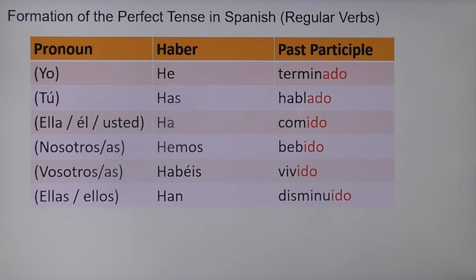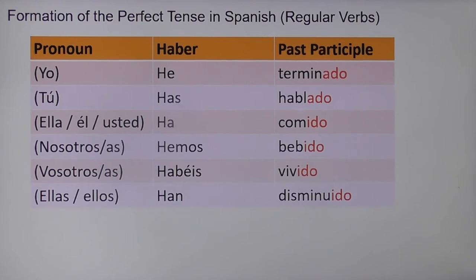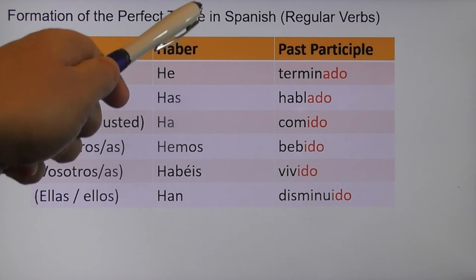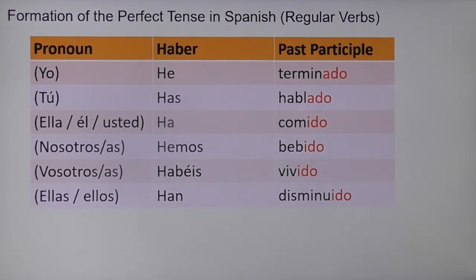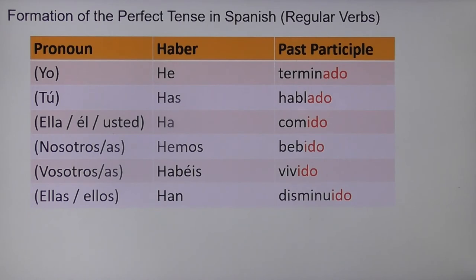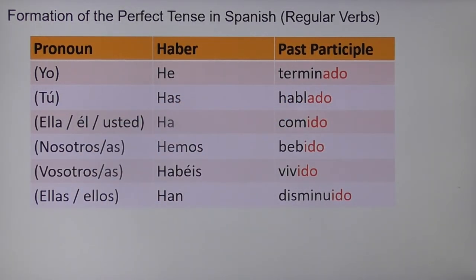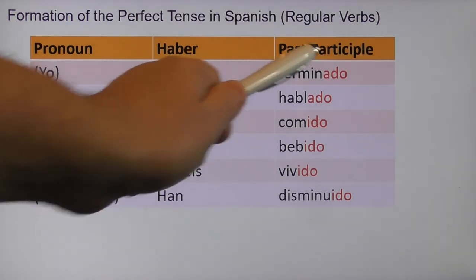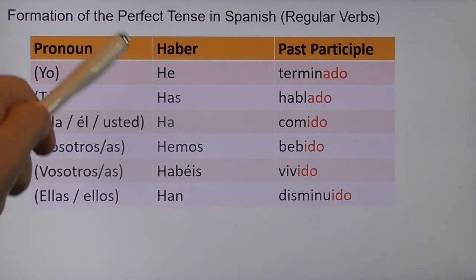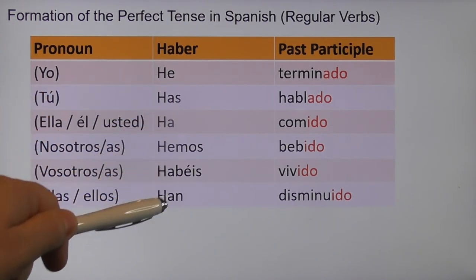So how do you form the perfect tense in Spanish? We're going to look at regular verbs to begin with. Here is our conjugation grid with our pronouns: I, you, she, he — that's the polite form for you — we, all of you, and they. We're going to start with the verb haber, which means to have. It's not the same as tener. Haber is used when you have two conjugated verbs together — so don't use tengo terminado for I have finished. We use the conjugations for haber: he, has, ha, hemos, habéis, han.